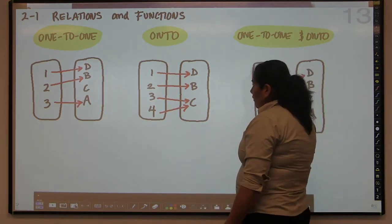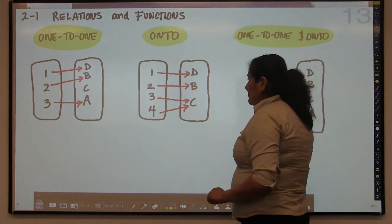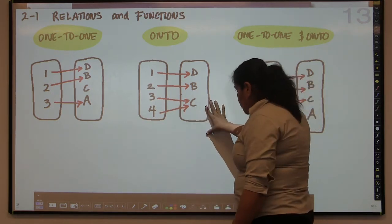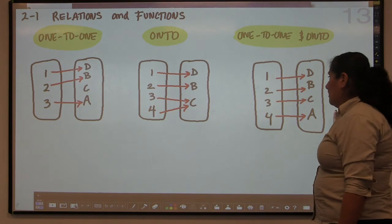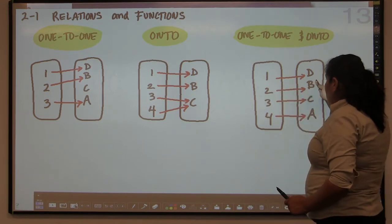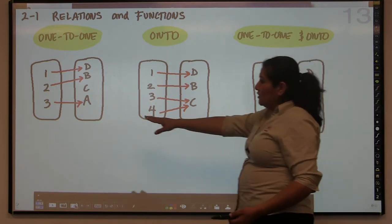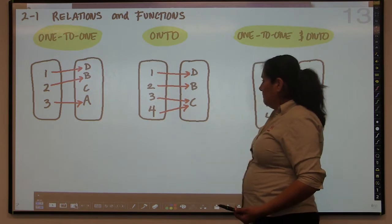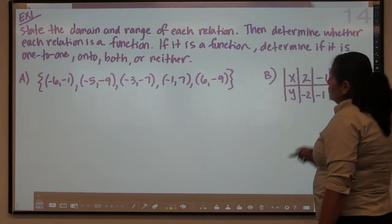It's okay that both the 3 and the 4 are being paired with 'c' — that's not a problem — as long as there's no other 3 value paired with a different letter. Everything in the range has to have an x value paired with it. If you're one-to-one and onto, that means every x value goes to one y value, and all of the y values are paired to something in the x. So this would be a one-to-one and onto combined.